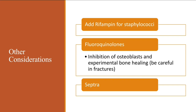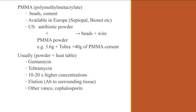A couple of comments about therapy: treat based on cultures. Add rifampin for Staphylococcus infections. Be careful about fluoroquinolones after acute fractures because of problems with bone healing. Note that vancomycin actually has very good bone penetration — which many people don't appreciate — making it a good drug for osteomyelitis.